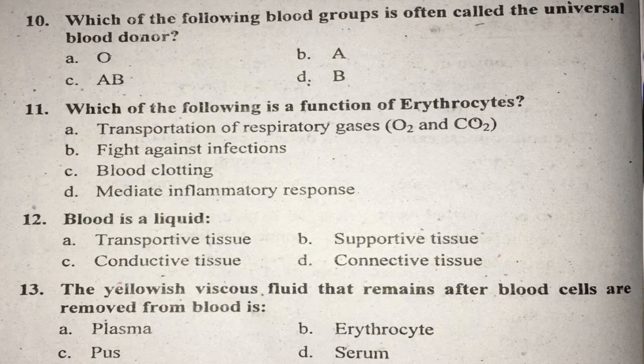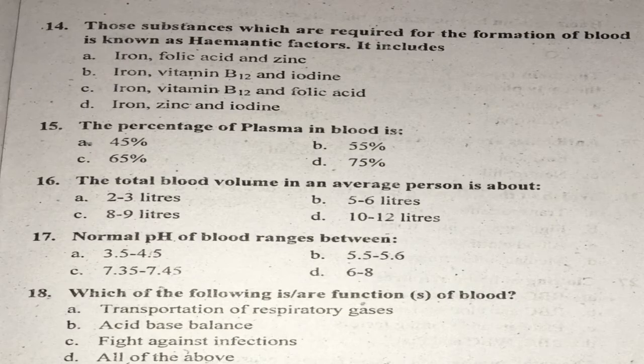Question number fourteen: Substances which are required for the formation of blood are known as hematopoietic factors. These include iron, vitamin B12, and folic acid. These are the three main hematopoietic factors. Right answer is C.